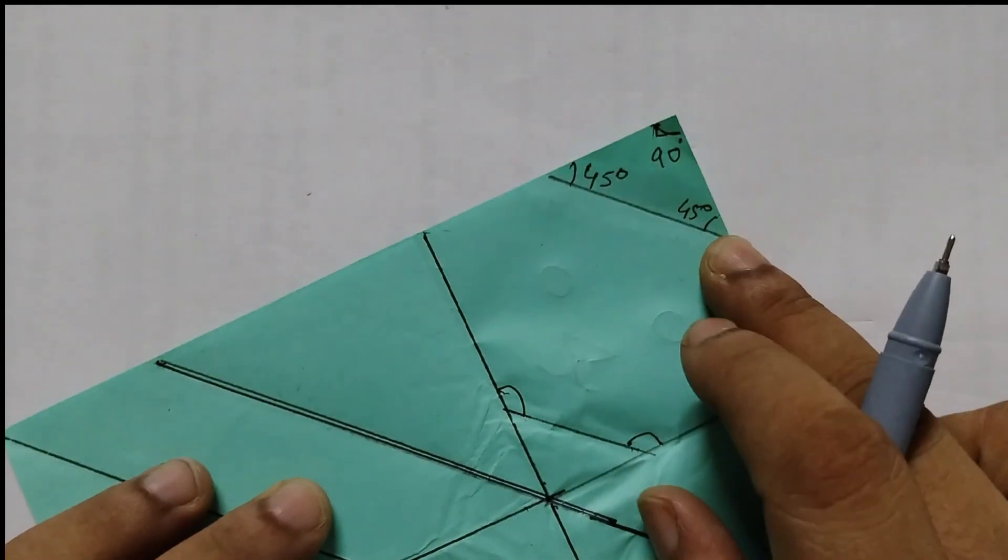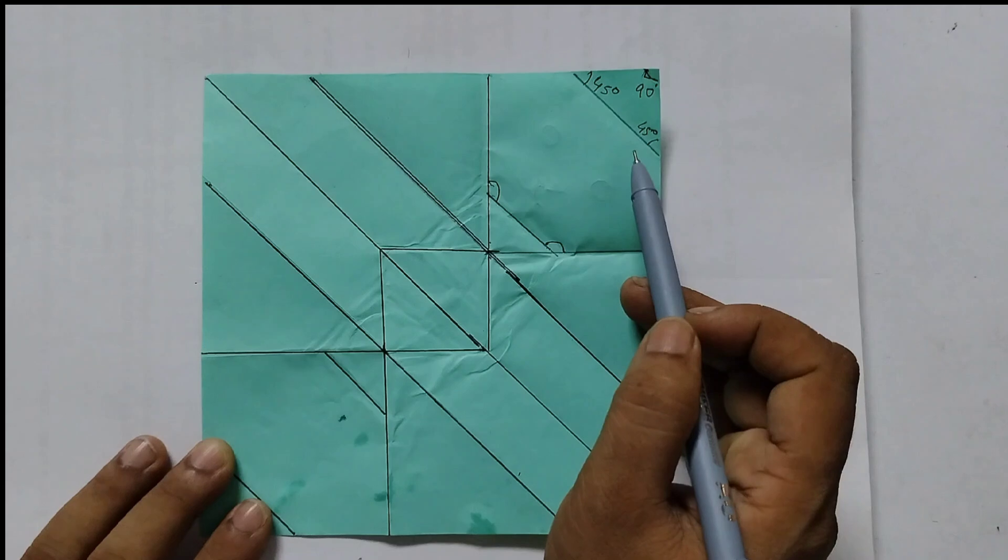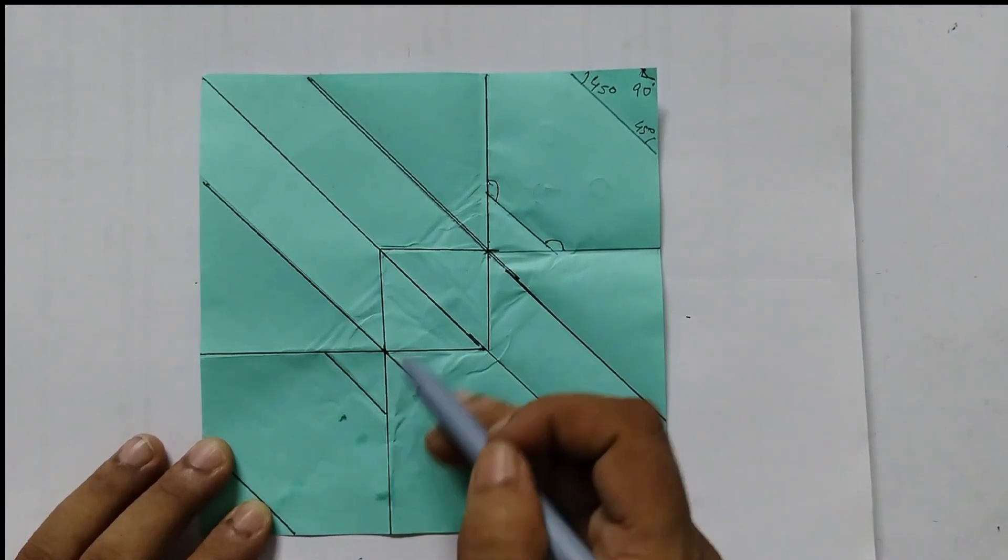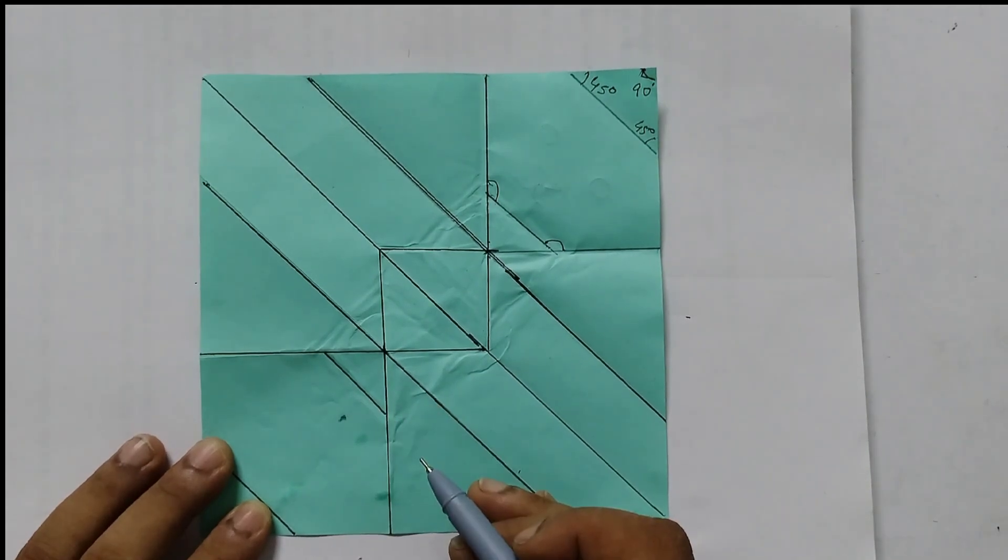So I have shown you these three angles. 90 degrees, 45 degrees and 45 degrees. Find out the rest of the angles. And in our next video we will see what are the measures that we get. I hope you find this activity interesting. Thank you.